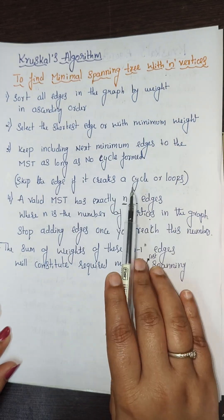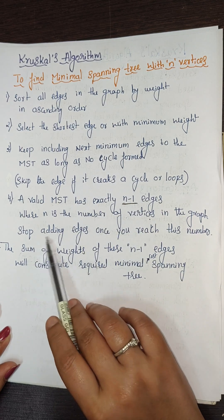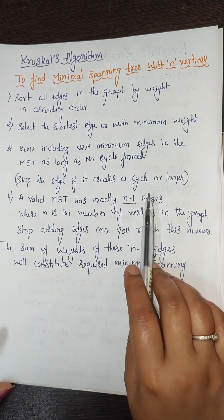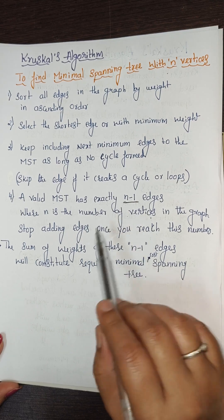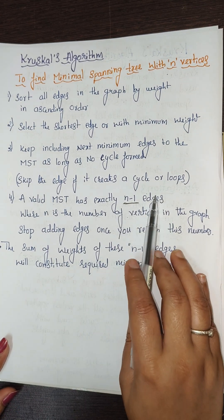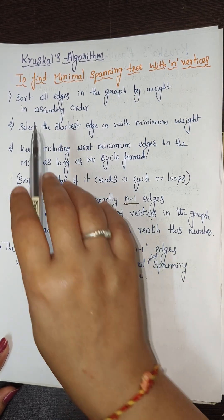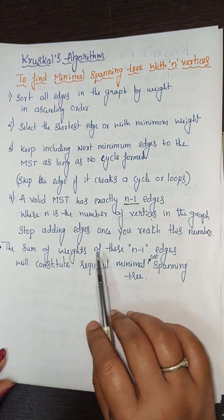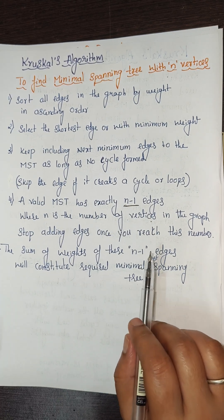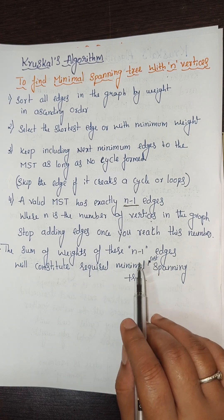For example, if there are 12 vertices the MST must have exactly 11 edges. Once you reach n minus 1 edges, stop adding edges — after that any additional edge would form a cycle. Finally, add all the weights of the selected edges to get the total cost of the minimum spanning tree. Whether the question uses the terms cost, value, or weight, the meaning is the same.